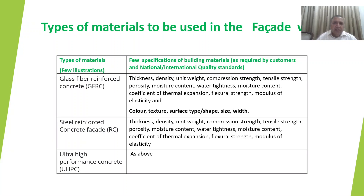Different kinds of materials are required for the façade. For GRC type — glass fiber reinforced concrete — the important input specifications include thickness, density, unit weight, compression strength, tensile strength, porosity, moisture content, water tightness, DPM, coefficient of thermal expansion, flexural strength, and of course color, texture, surface type, shape, size, and width. These are the important material properties which designers need to be aware of and incorporate for quality and strength.